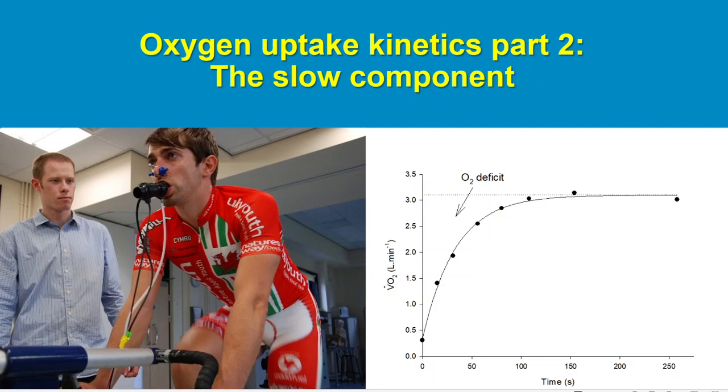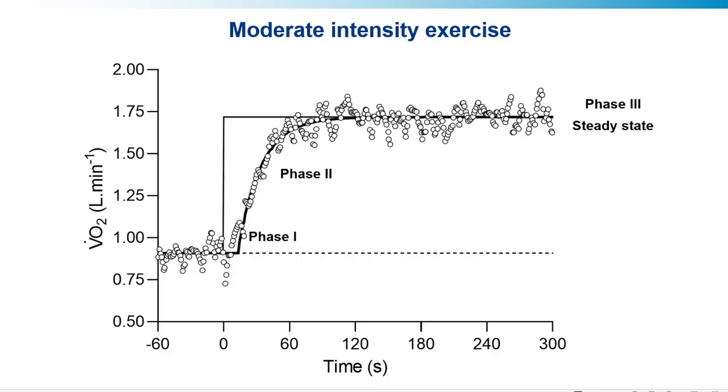Last week we talked exclusively about the kinetics of oxygen uptake during moderate intensity exercise, that is exercise performed below the lactate threshold. We discussed the three-phase VO2 response to exercise, starting with the cardiodynamic phase, phase 1, the primary phase, phase 2, which represents what's going on inside the muscle, and then the steady state, phase 3.